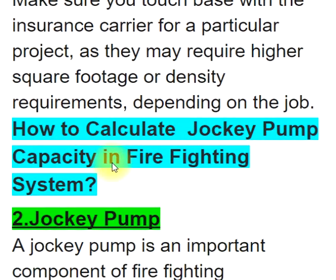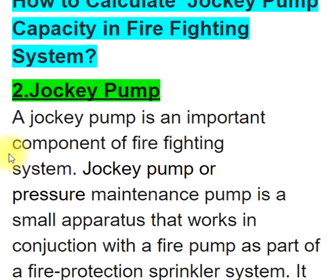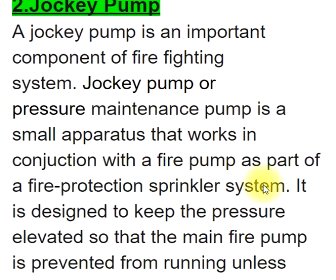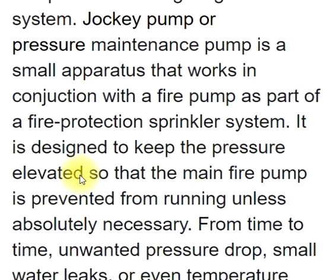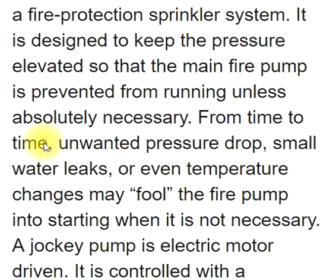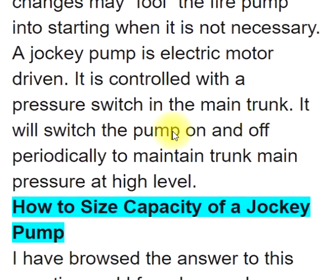Jockey Pump — a jockey pump is an important component of a firefighting system. Also called a pressure maintenance pump, it is a small apparatus that works in conjunction with a fire pump as part of a fire protection sprinkler system. It is designed to keep the pressure elevated so that the main fire pump is prevented from running unless absolutely necessary. From time to time, unwanted pressure drops, small water leaks, or temperature changes may cause the fire pump to start unnecessarily. A jockey pump is electric motor driven and controlled by a pressure switch in the main trunk; it switches on and off periodically to maintain trunk main pressure at a high level.